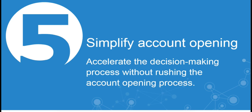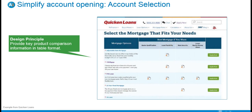Our last digital practice to highlight today is number five: simplify account opening. We mean simplifying the account research and application steps, which can accelerate the decision-making process without rushing the account opening process. Choosing an account can become a headache for customers when there are so many details to consider about each option. Displaying the important comparable facts — like the APR or the mortgage rate — very prominently in a comparison table format builds trust with consumers and keeps them engaged in your content.